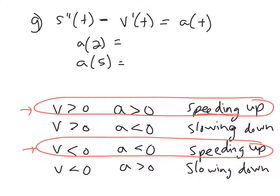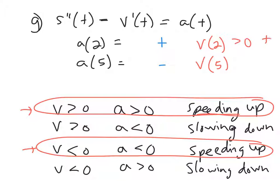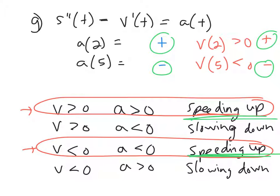Back to part g — once I find acceleration at t equals two and t equals five, I check whether they're positive or negative. Acceleration is positive at two and negative at five. Then I find velocity at those times — I only care about the sign. Velocity at two is greater than zero (positive), and velocity at five is less than zero (negative). Positive and positive: same sign — speeding up. Negative and negative: same sign — also speeding up.